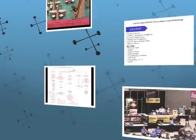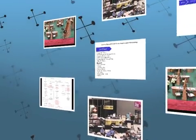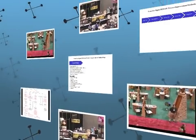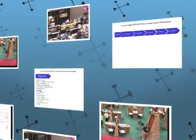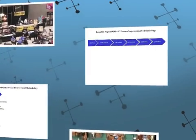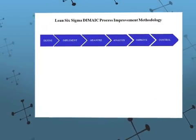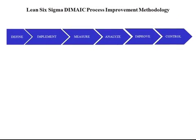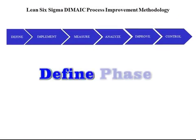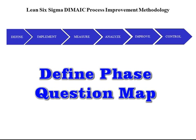In this lesson, I'll do a brief overview of the defined phase of the Lean Six Sigma DMAIC process, and then I'll introduce a new tool called the Question Map. So let's get started.